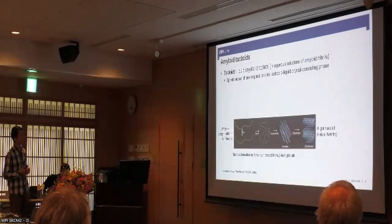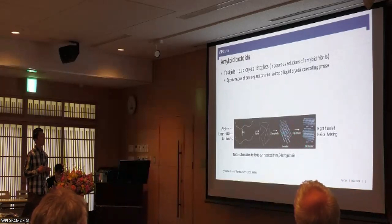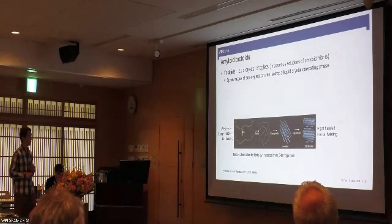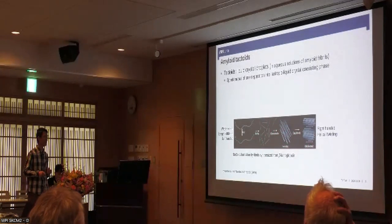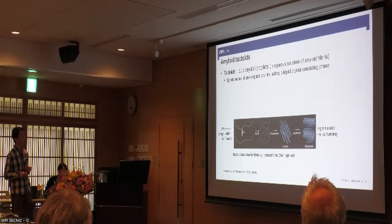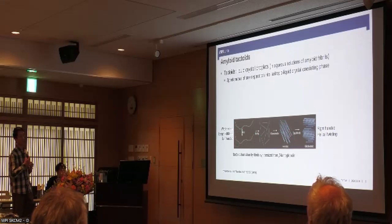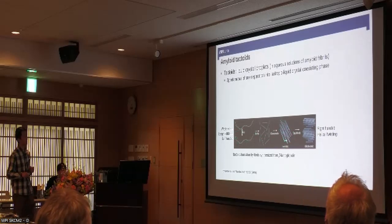We used a protein extracted from cow milk called beta-lactoglobulin. We can artificially synthesize those amyloid fibers by a number of processes involving cutting, purifying, and concentrating. We can make them into a liquid crystal phase consisting of fibers about four nanometers in diameter and about 400 nanometers in length. They're pretty rigid — in physics, you can think of them as rather rigid rods. They are left-handed and can form in both a nematic or cholesteric phase.